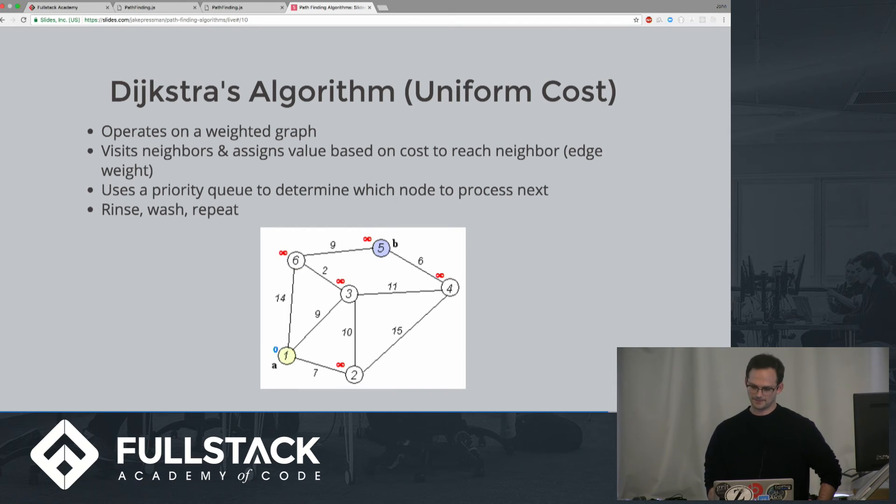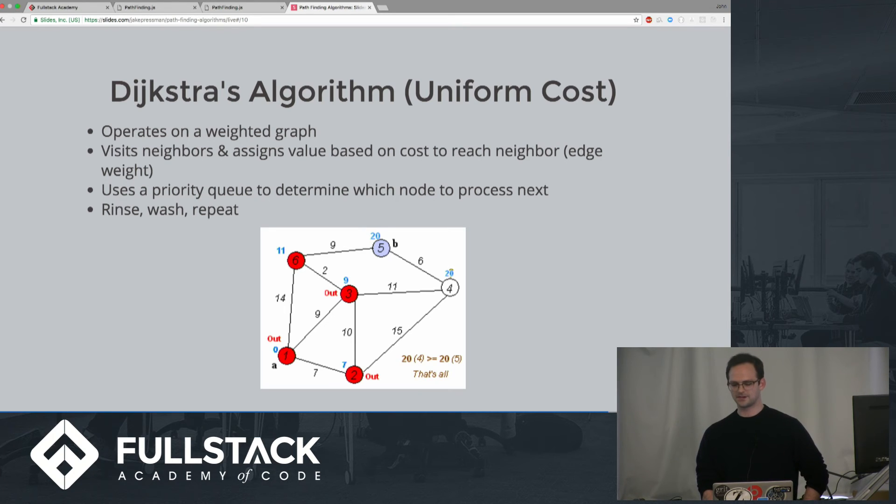If a neighbor node was previously assigned a value, but the cost of getting there from the current node is less than its current value, we reassign the value of that current node. Otherwise, the value of the visited node stays the same. Once all of the neighbor nodes have been visited and assigned a value, we navigate to the node with the lowest cost or assigned value, which we can do through a priority queue. We repeat this process until we reach the goal node or can't reach the goal node. Once again, we make sure to maintain a reference to the node from which we came so we can retrace our path once we reach the goal.